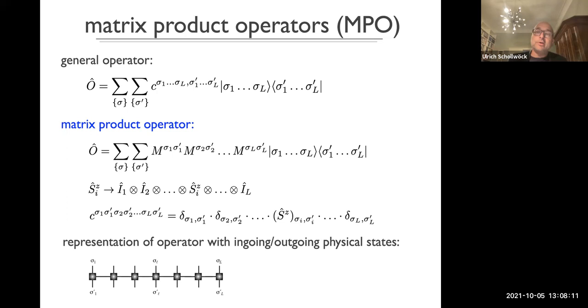As opposed to the state which has one leg for the physical local state, the operator has one incoming and one outgoing leg. The interesting thing is that compared to the states where for a strongly correlated quantum state, we will typically not be able to write it down exactly as a matrix product state, the operators actually are usually quite compact. For example, a local spin operator is the identity matrix everywhere except on the site where the spin operator acts.